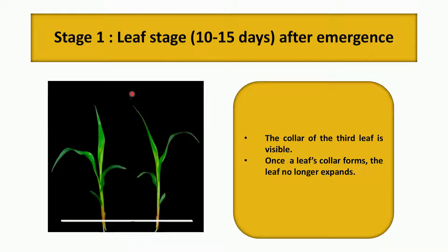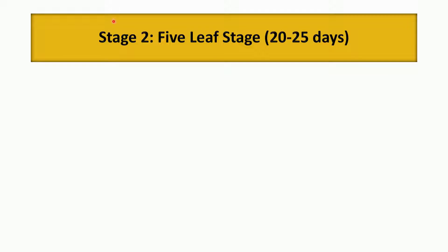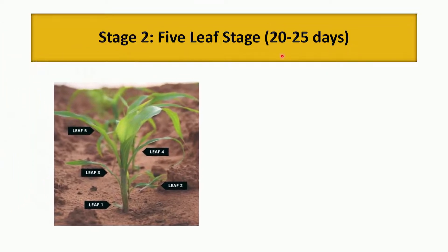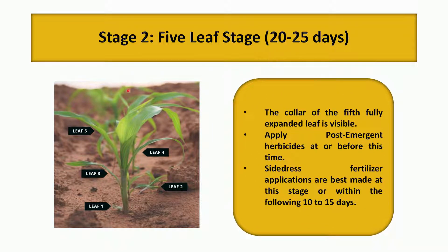This stage depends upon soil temperature and moisture. Stage 2 is the fifth leaf stage, occurring 20 to 25 days after emergence. The identification characteristic is the color of the fifth fully expanded leaf. At or before this stage, you can apply post-emergent herbicides, and it is also the best time for side-dress fertilizer application.